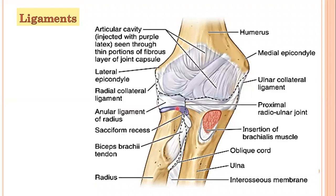The joint capsule is common and the joint cavity is also common, shared between the elbow joint and the superior radio-ulnar joint.